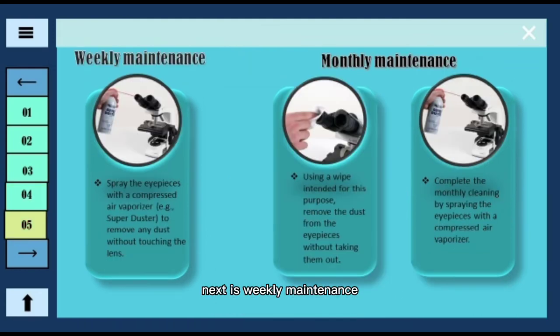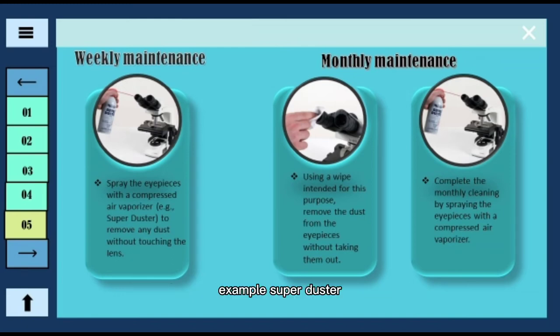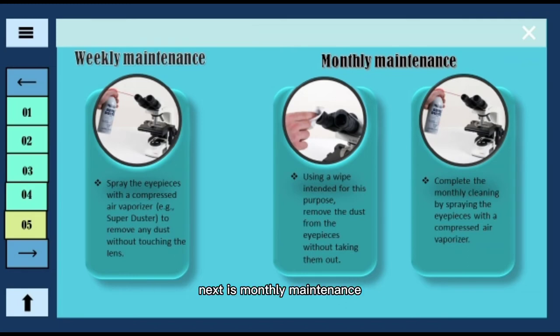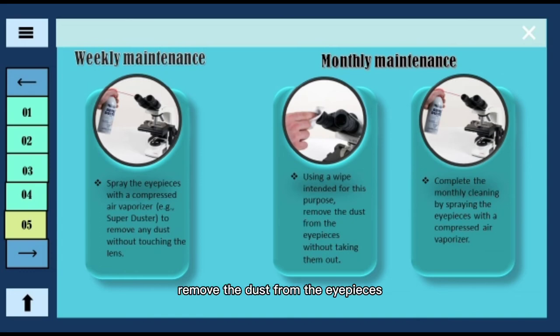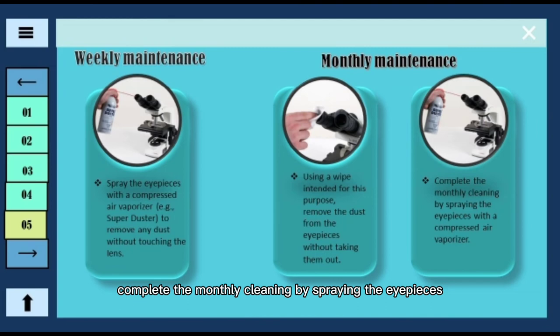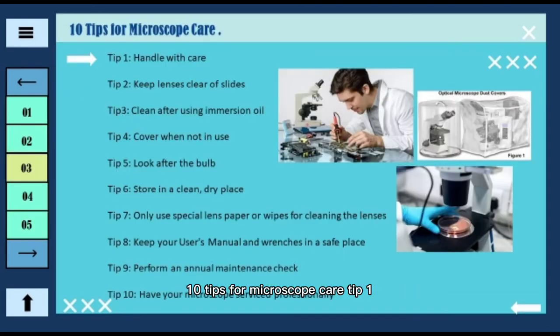Weekly maintenance: spray the eyepieces with a compressed air vaporizer, such as a super duster, to remove any dust without touching the lens. Monthly maintenance: using a wipe intended for this purpose, remove dust from the eyepieces without taking them out. Complete the monthly cleaning by spraying the eyepieces with a compressed air vaporizer.